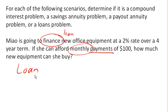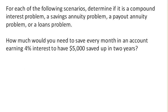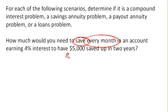How much would you need to save every month in an account earning 4% interest to have $5,000 saved up in 2 years? We're saving money every month, so we know that this is some sort of annuity-type problem. We're saving money, which certainly suggests that this is a savings annuity. We want to have $5,000 in 2 years — that's just telling us the amount we'll have in 2 years — but this is indeed a savings annuity.